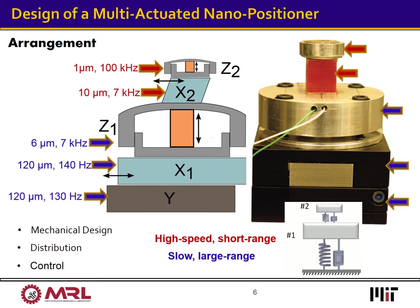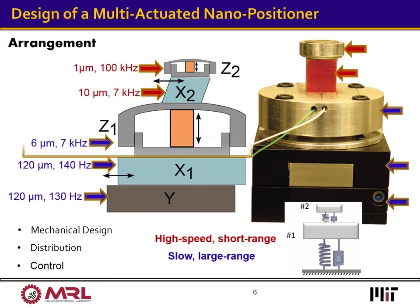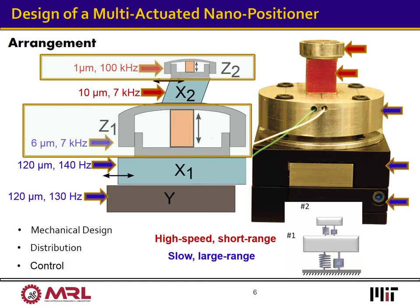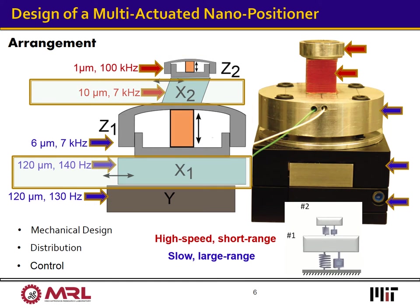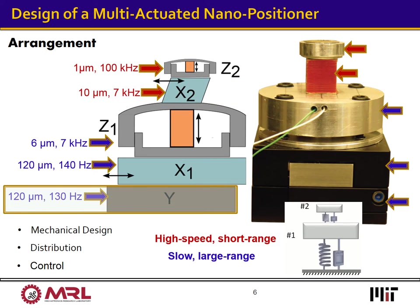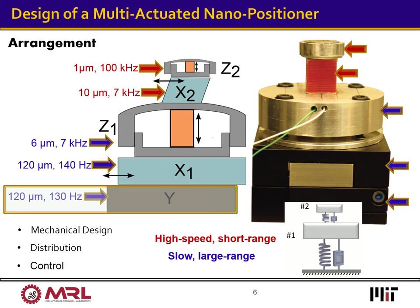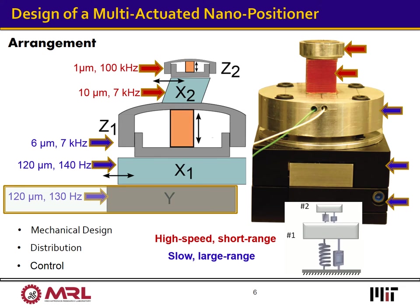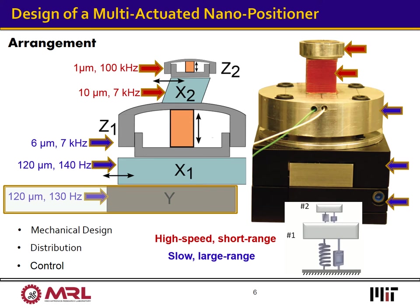In this example design, the nanopositioner contains five components: two for out-of-plane Z positioning, two for high-speed lateral X direction, and one for lateral Y direction. This design achieves three orders of magnitude improvement in speed compared to conventional nanopositioners, but without any compromise in kinematic range.